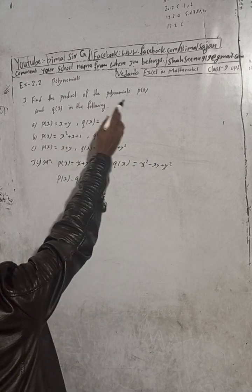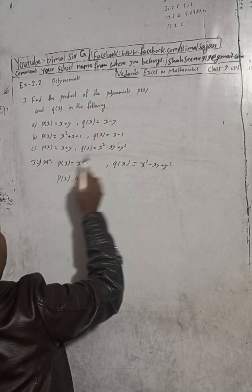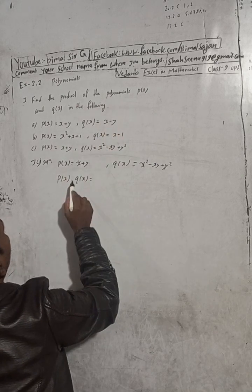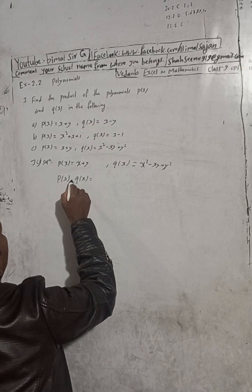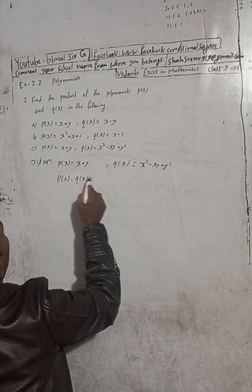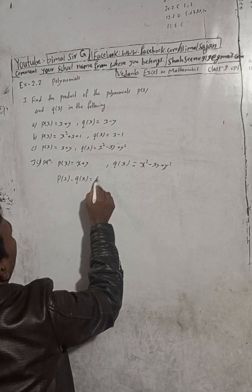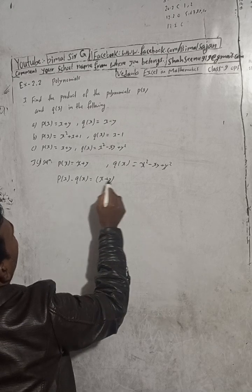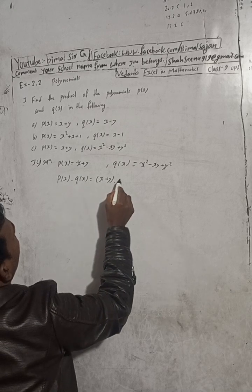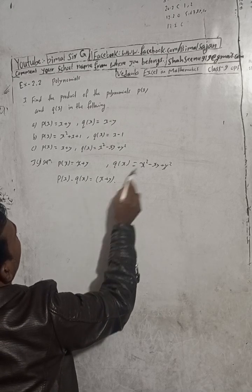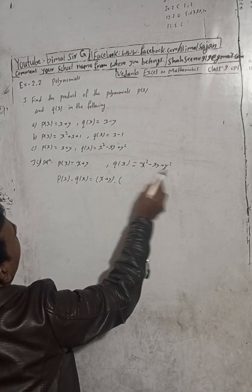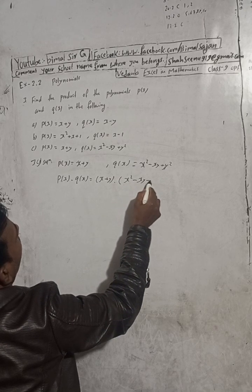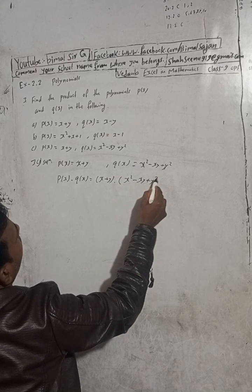Find the product of the polynomials. P(x) into Q(x): P(x) is x plus y, dot to multiply, Q(x) is x squared minus xy plus y squared. So we have (x plus y) multiplied by (x squared minus xy plus y squared).